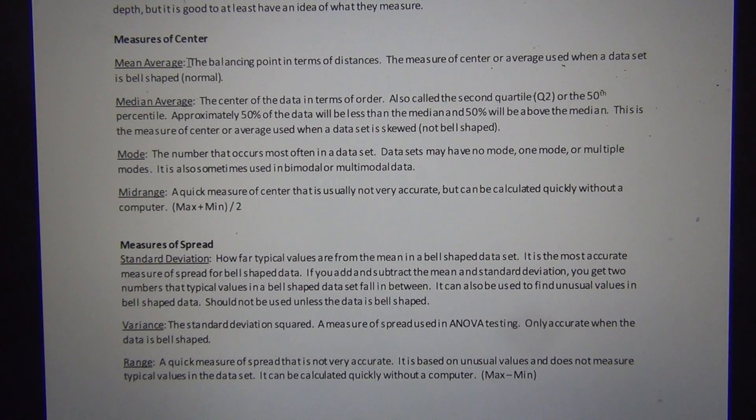We've gone over some of these. For example, the mean average we've gone over already. This was the balancing point in terms of distances. It measures the center average when the data set is normal. It's not accurate when the data is not normal.